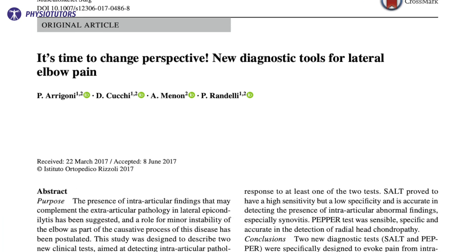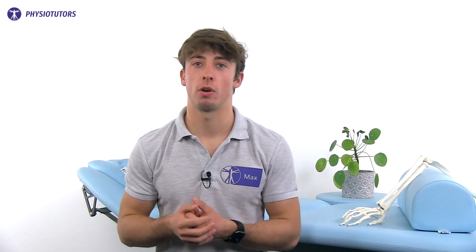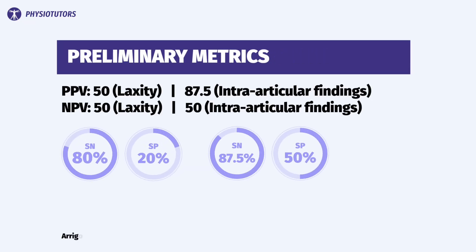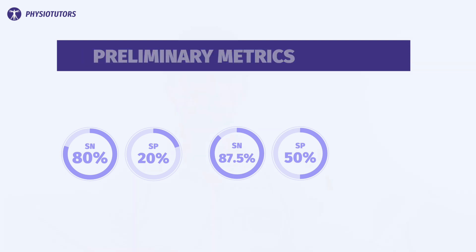According to Arigoni et al. in 2017, the preliminary metrics of this test are a positive predictive value of 50 for laxity and 87.5 for intra-articular findings. The negative predictive value is 50 for both laxity and intra-articular findings. Note that these numbers are coming from an orthopedic setting with a high prevalence of such findings, meaning the numbers appear more promising compared to a first-line clinical setting.